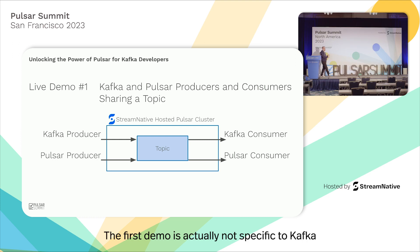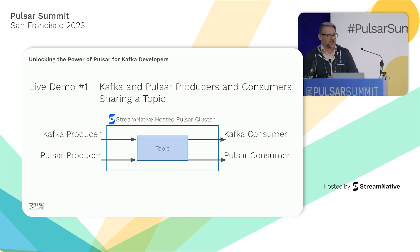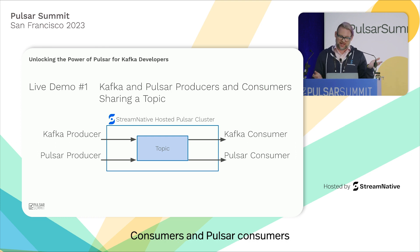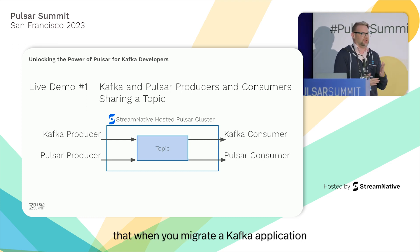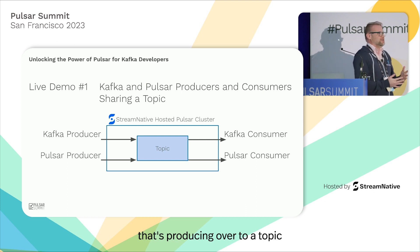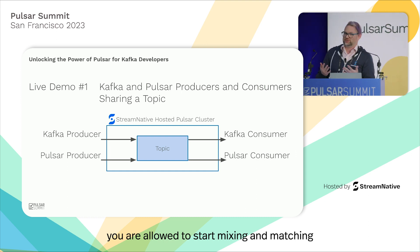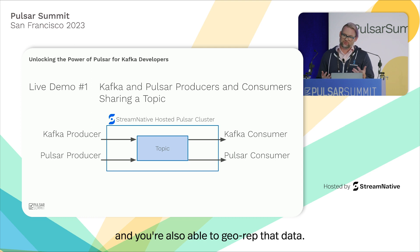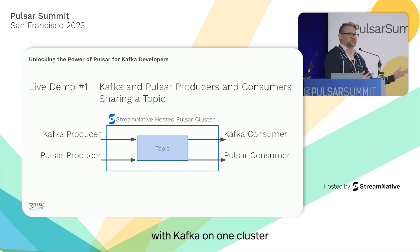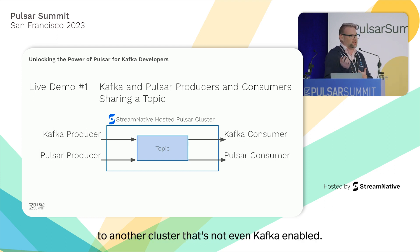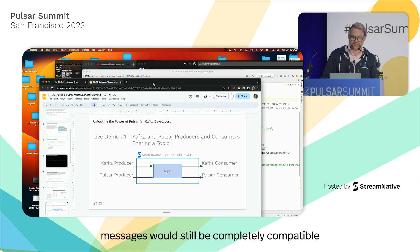The first demo is actually not specific to Kafka on Stream Native necessarily. It's a demo of how Kafka producers, Pulsar producers, Kafka consumers, and Pulsar consumers all work well together. Not everyone is necessarily aware that when you migrate a Kafka application that's producing to a topic and maybe consuming with Kafka from that same topic, you are allowed to start mixing and matching who your producers and consumers are. You can also geo-replicate that data — messages produced with Kafka on one cluster can be consumed on another cluster that's not even Kafka-enabled, using the Pulsar client, and those messages would still be completely compatible.